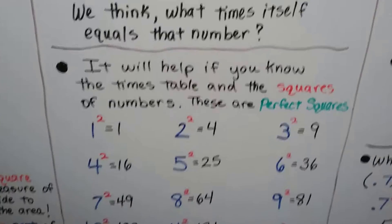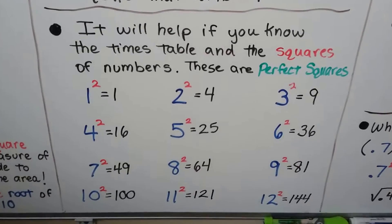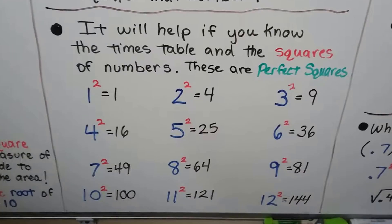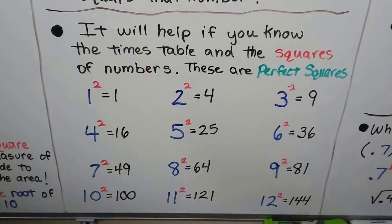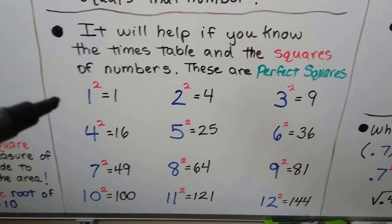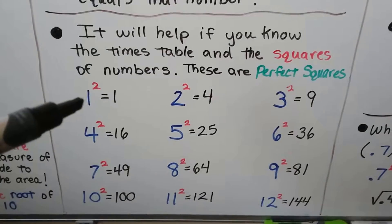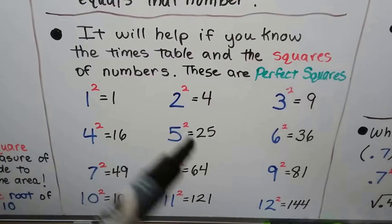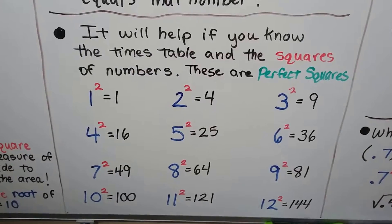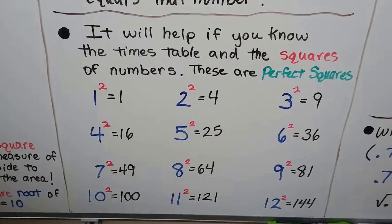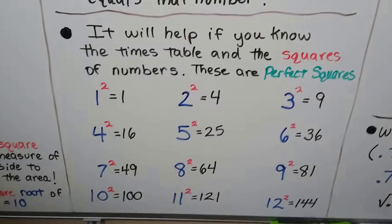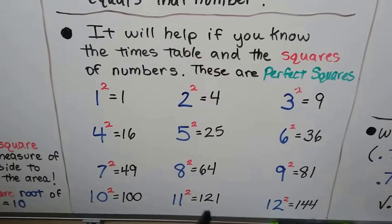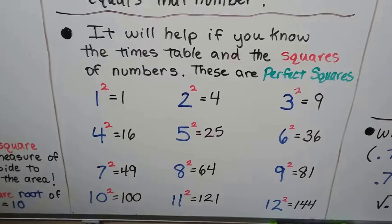It's going to really help you if you know the times table and the squares of numbers. Now, these are called perfect squares. There's no rational numbers, which means there's no fractions or decimals. These are just whole numbers. 1 times 1 is 1. 2 times 2 is 4. 3 times 3 is 9. These are all perfect squares because they're just whole numbers. When you multiply them to themselves, they equal that number.